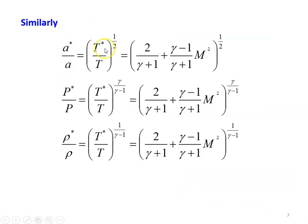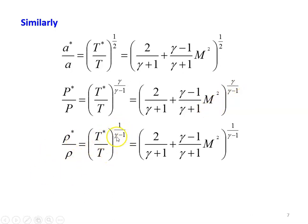Similarly, other critical-to-static property relationships: A star by A equals T star by T to the power 1 by 2, which equals (2 by (Gamma plus 1) plus (Gamma minus 1) by (Gamma plus 1) M squared) to the power 1 by 2. P star by P equals T star by T to the power Gamma by (Gamma minus 1), giving (2 by (Gamma plus 1) plus (Gamma minus 1) by (Gamma plus 1) M squared) to the power Gamma by (Gamma minus 1). And Rho star by Rho equals T star by T to the power 1 by (Gamma minus 1), giving (2 by (Gamma plus 1) plus (Gamma minus 1) by (Gamma plus 1) M squared) to the power 1 by (Gamma minus 1). These are the relationships between critical properties and static properties.